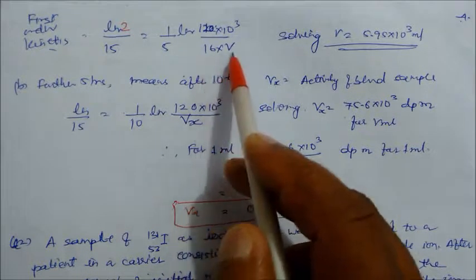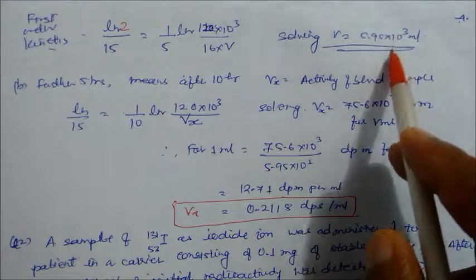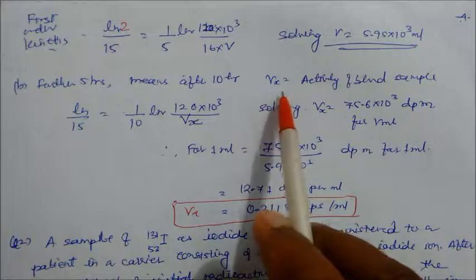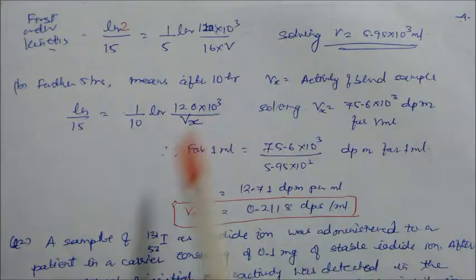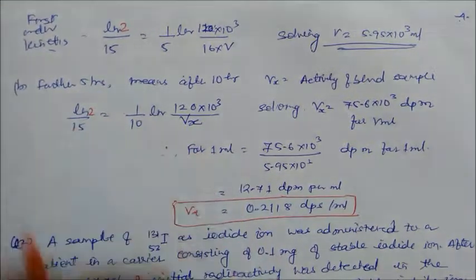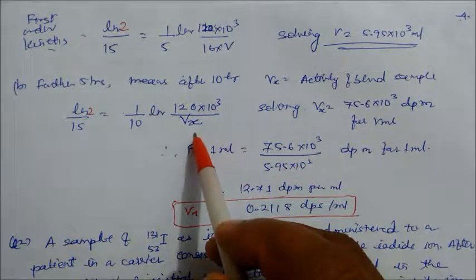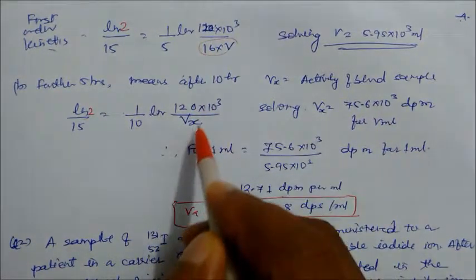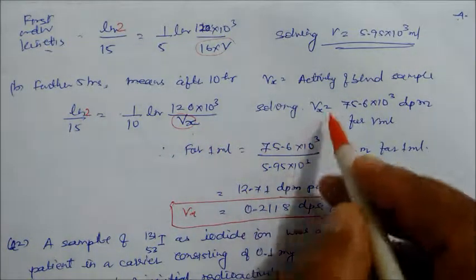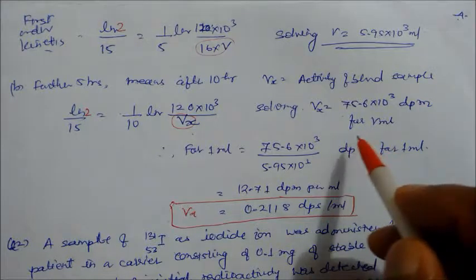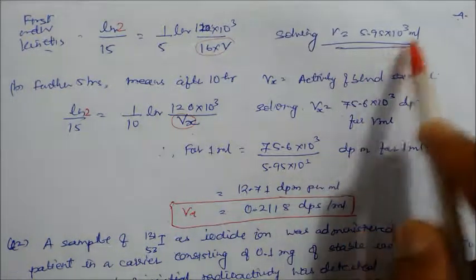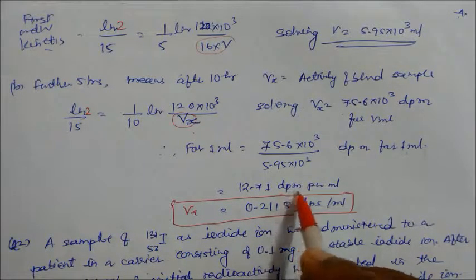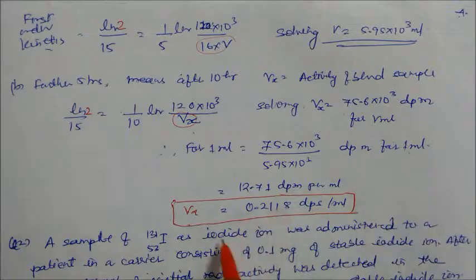For the second part — activity of blood sample after a further 5 hours (i.e., 10 hours total): using first order kinetics with t = 10 hours and the same initial amount, calculate the activity per ml for volume Vx. The total DPM divided by volume gives 12.71 DPM per ml, which converts to approximately 0.2118 DPS per ml.